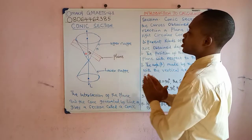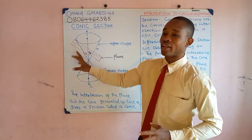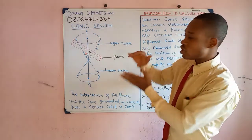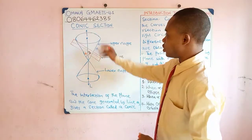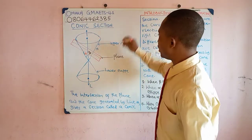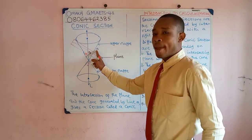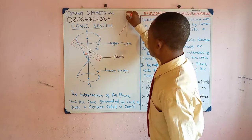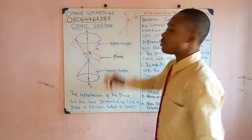As you see on the board here, we have a diagram of a cone and we also have a plane intersecting the cone, cutting across it. We have two cones — the upper cone and the lower cone. How was this cone originally generated? You can see the vertical axis of the cone, L, and we have a straight line labelled M. We call M the generator. There is an angle alpha between them.